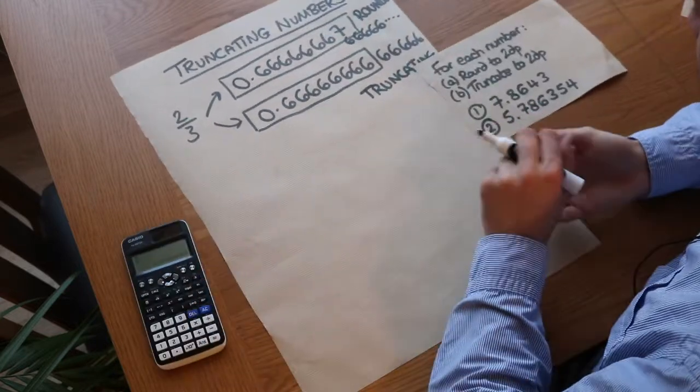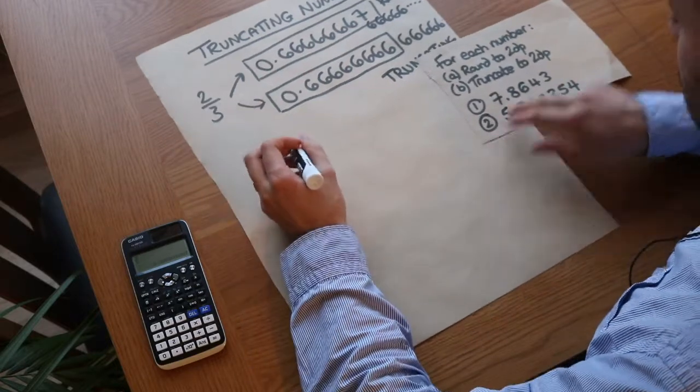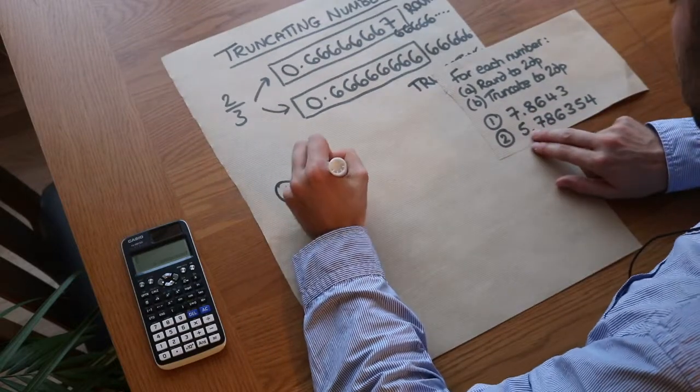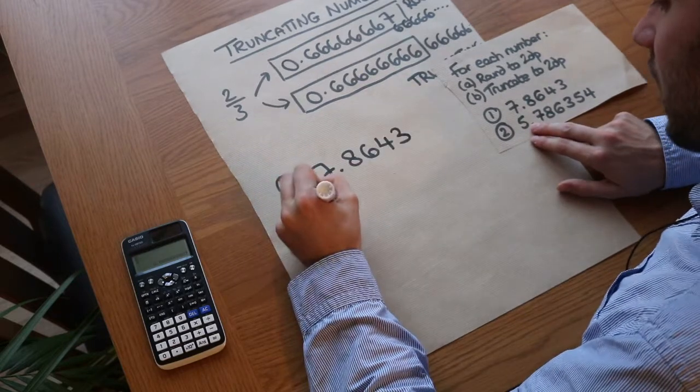If we take these questions here, we want to round to two decimal places and truncate to two decimal places. So 7.8643.